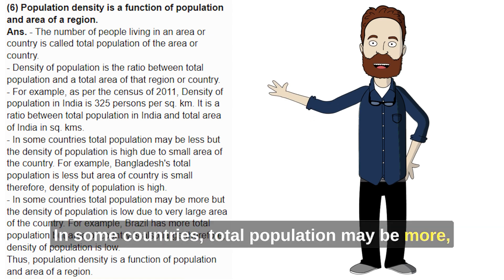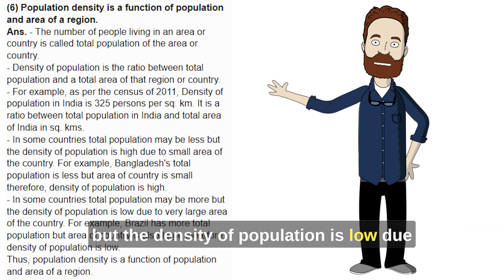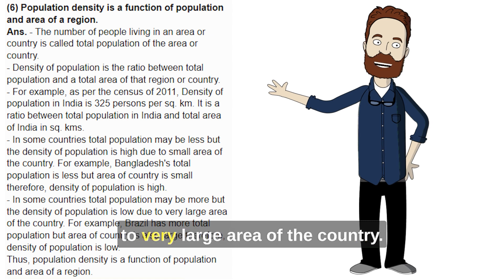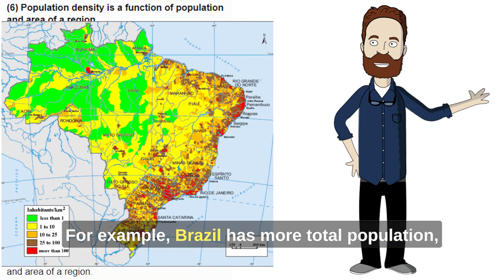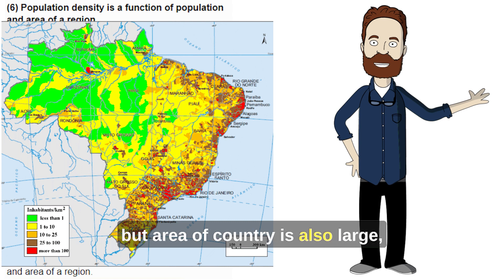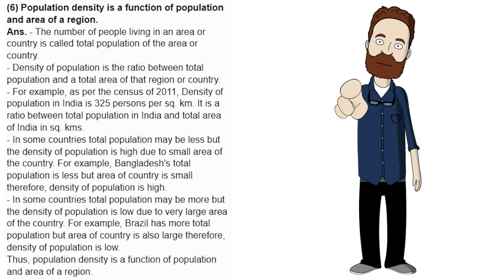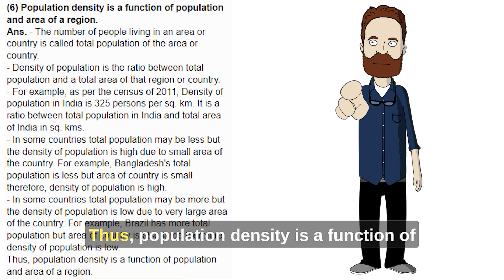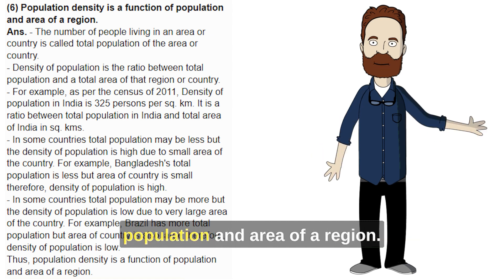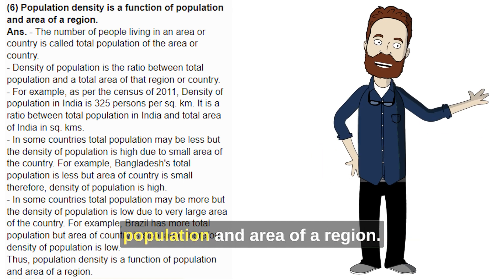In some countries, total population may be more but the density of population is low due to the very large area of the country. For example, Brazil has more total population but the area of the country is also large, therefore density of population is low. Thus, population density is a function of population and area of a region.